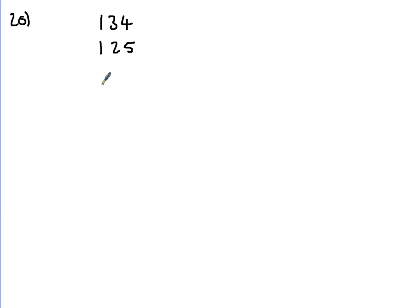And question 20 — Mr. Williams has gone on a school trip, worth 3 marks. There'll be 134 Year 8s, 125 Year 9s, and 30 adults. So we're going to add them up: 4, 5 and 0 gives you 9; 3, 2 and 3 gives you 8; 1 and 1 is 2. So we've got 289 people in total.